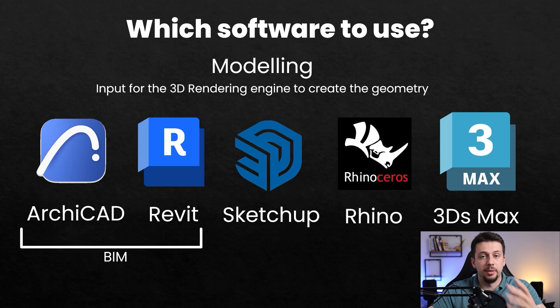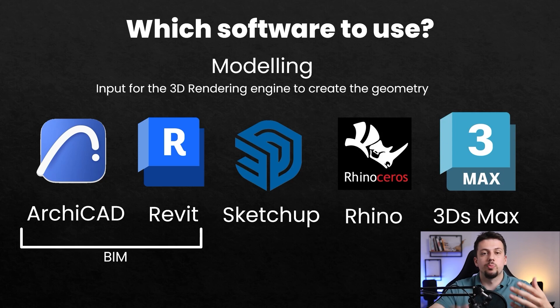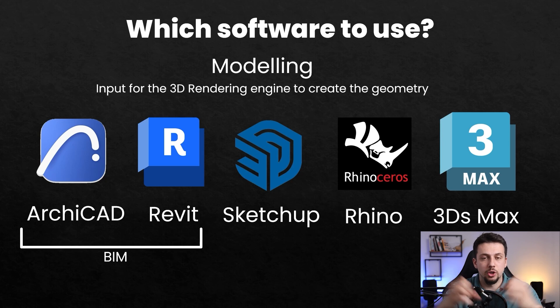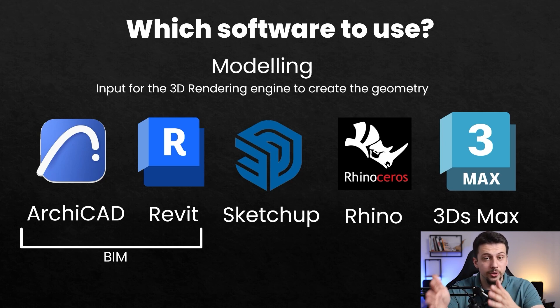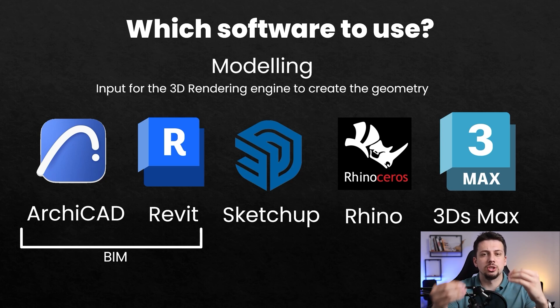ArchiCAD and Revit are BIM software, and if you're an architect you probably have some basic knowledge of them because you can make all of the documents in one place — the sections, the floor plans, and even the 3D model. It's good to have at least some basic knowledge of them because most of the files you're going to receive are most likely going to be in this format.